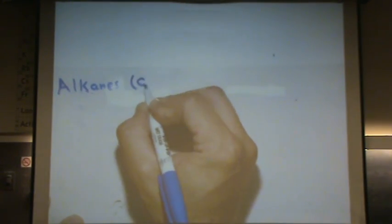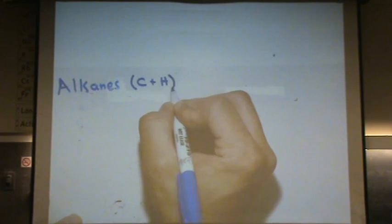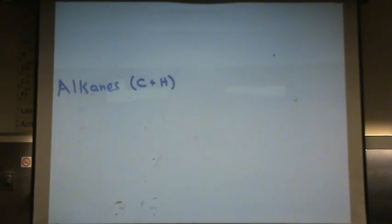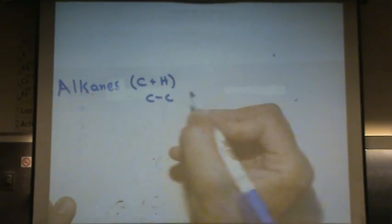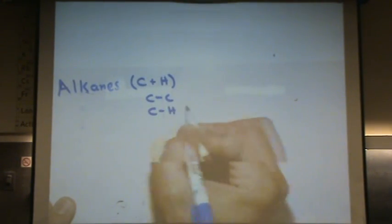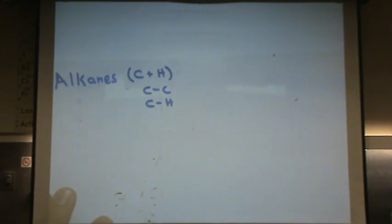Alkanes are the functional group, or really it's lack of a functional group, that have carbons and hydrogens only. They're always single bonded to each other, so they're all sp3 hybridized carbons. They're C-C single bonds and C-H single bonds, so it's composed of a mixture of those.